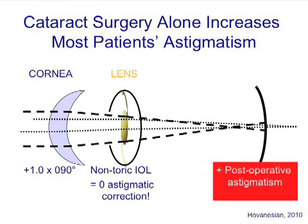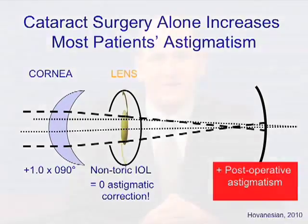What happens when cataract surgery is performed using a non-toric implant? Let's assume the clear corneal incision doesn't induce any astigmatism of its own. In this case, the lens is now spherical and the only remaining determinant of astigmatism is the cornea. The patient ends up with a diopter of post-operative astigmatism even though there was none before surgery. First, most patients' astigmatism increases after routine cataract surgery. Second, we can't use the pre-op spectacle refraction as a predictor of post-op astigmatism because it doesn't account for the change in lenticular astigmatism or incision-induced astigmatism.